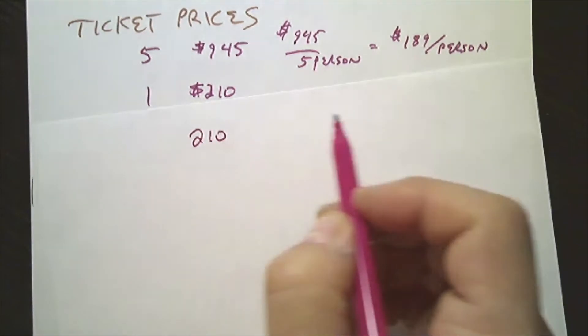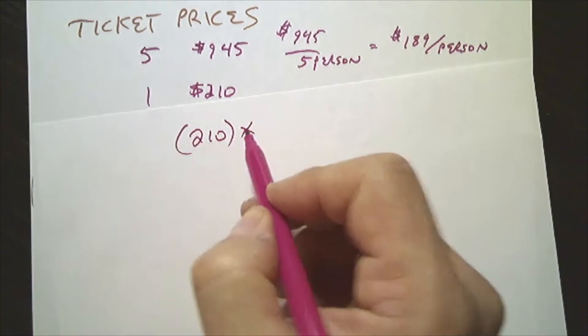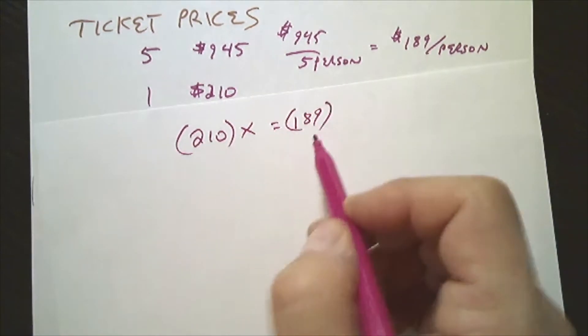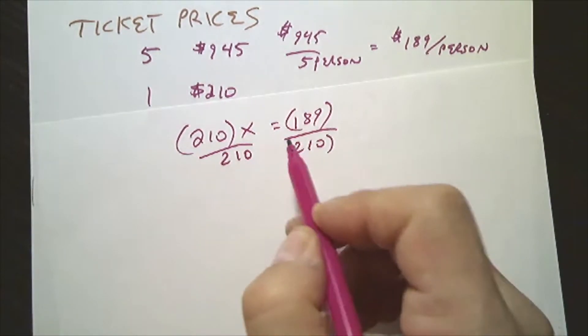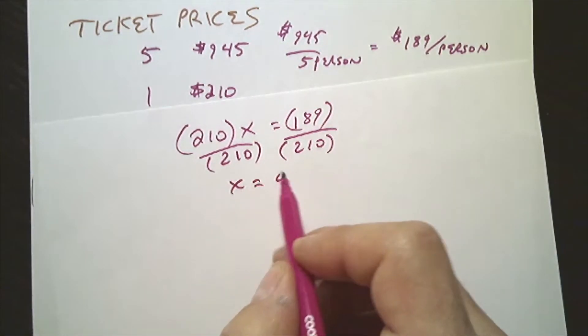So how much less is $189 from $210? So $210, if there is a discount, what would we multiply $210 by to get $189? So we divide both sides by $210. We have x is equal to $0.9.